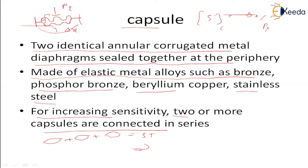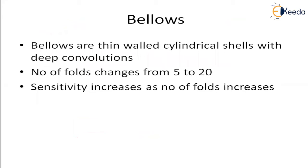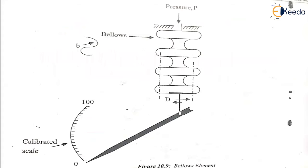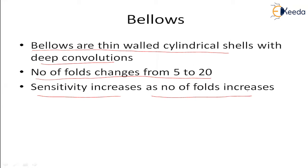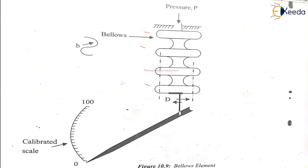Next we go to a very important elastic element — the bellows. Bellows are thin-walled cylindrical shells with deep convolutions. Looking at the bellow element here, these are all the thin-walled cylindrical shells. The number of folds changes from 5 to 20, and sensitivity increases as the number of folds increases.